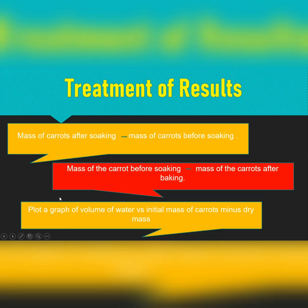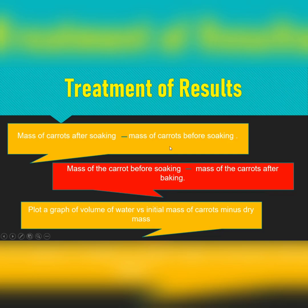Then we plot a graph, because graphs show trends and it's easy to read a trend from a graph. Plot volume of water versus the initial mass of carrots minus the dry mass — that gives you the answer. If you have difficulty plotting graphs, check out my video on how to plot graphs, and also my video on how to interpret graphs.